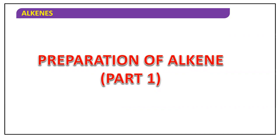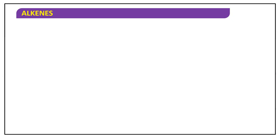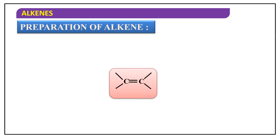Namaste. In the previous class we looked at the various methods of preparations of alkanes. In today's class we will specifically focus on preparation of alkenes. We've understood what alkenes are and how to name them. Alkenes are compounds which have a multiple bond, and specifically the multiple bond is a double bond. Let's look at the various methods of preparation of alkenes.